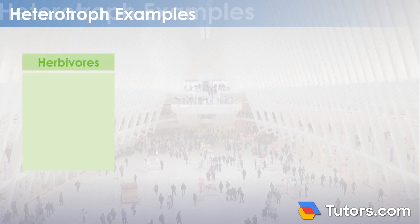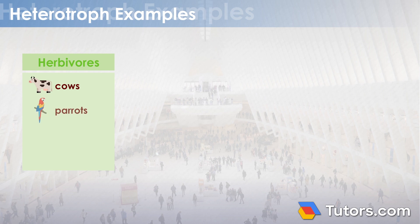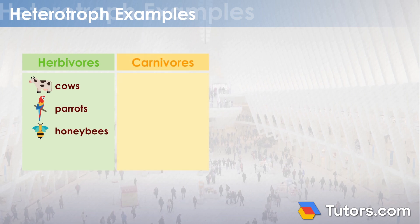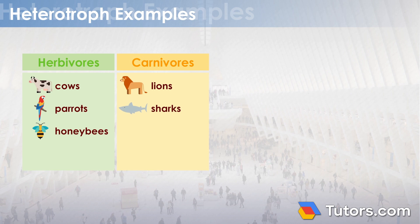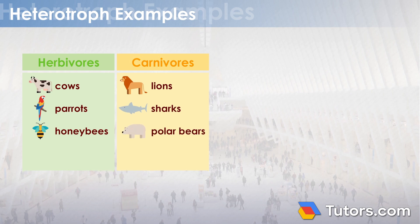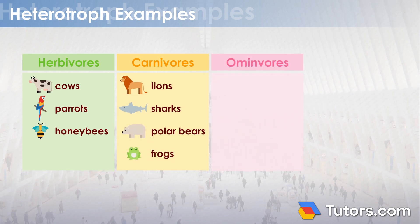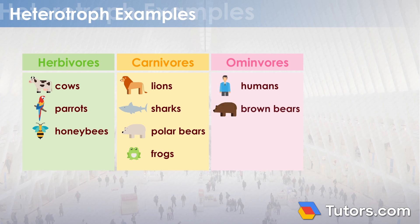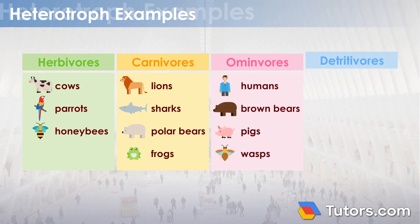Herbivores are animals such as cows, parrots, and honeybees. Carnivores are animals such as lions, great white sharks, polar bears, and frogs. Omnivores are organisms such as humans, brown bears, pigs, and wasps.